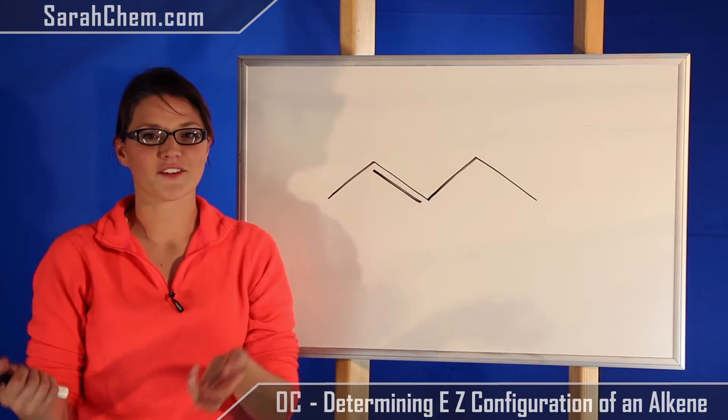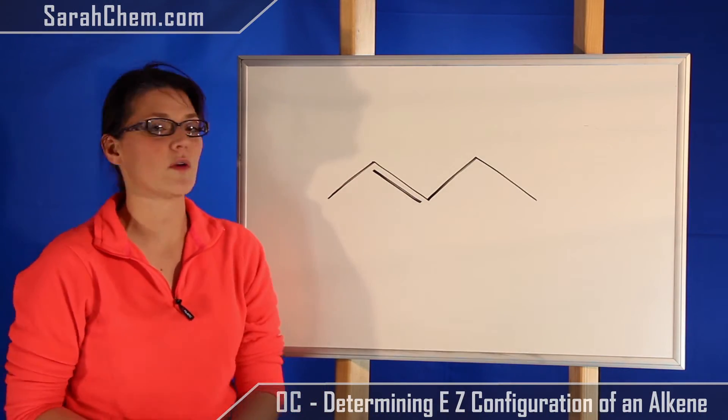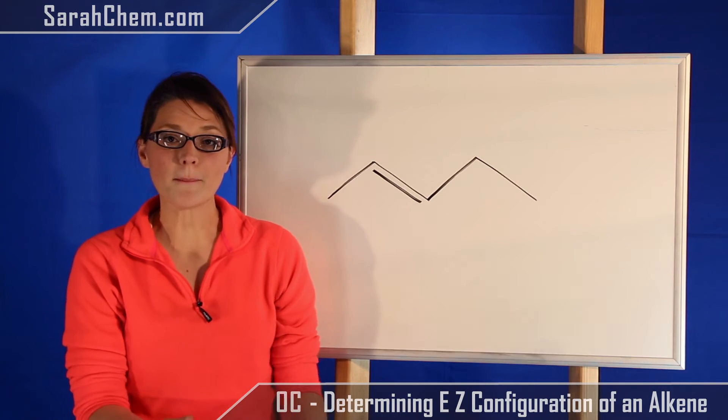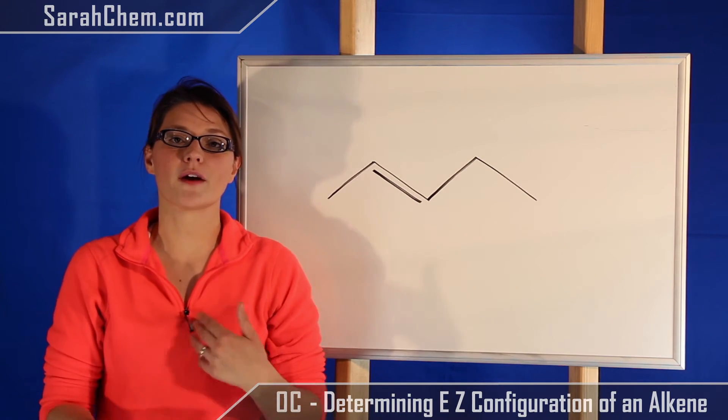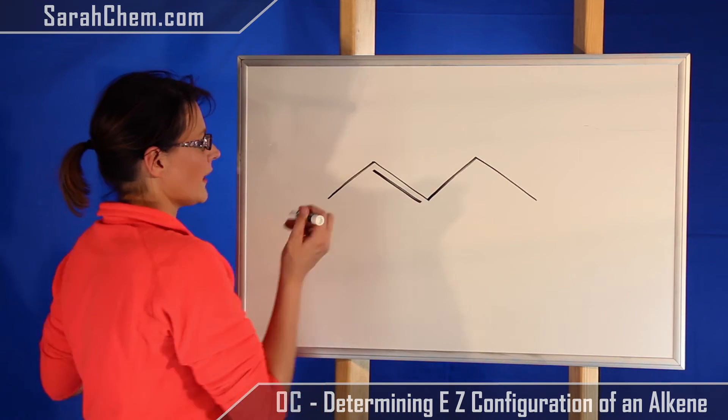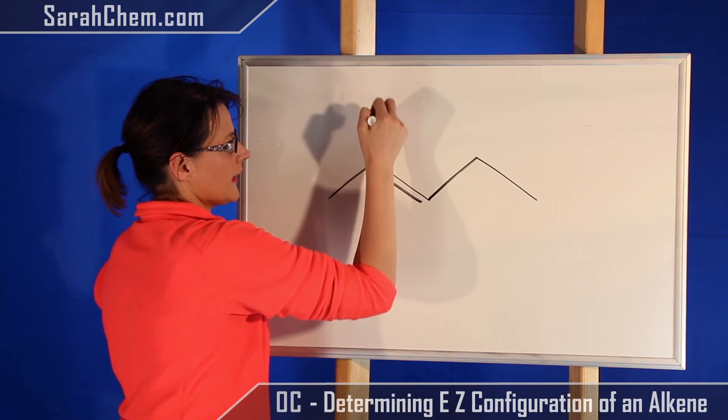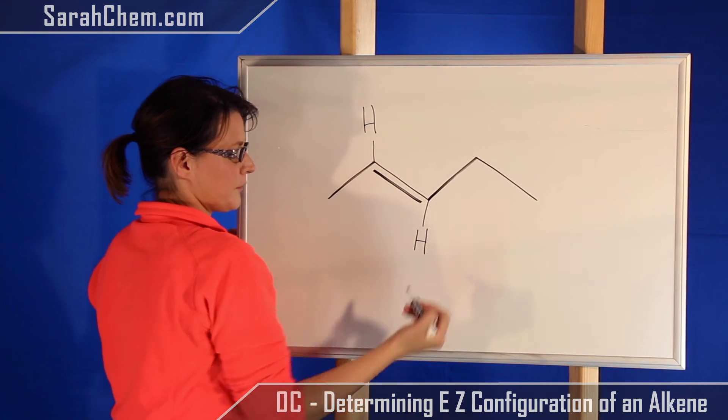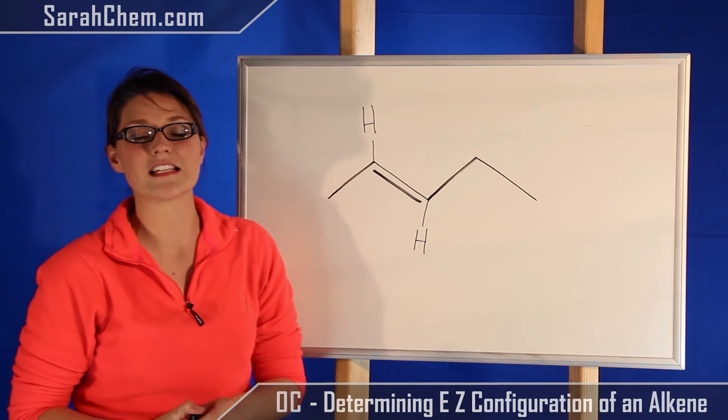Okay, so let's take a look at another example. In this case we're going to be dealing with a line structure. So remember that in a line structure, hydrogens are implied. If I just draw them in, there would be an H right here and there would be an H right there.